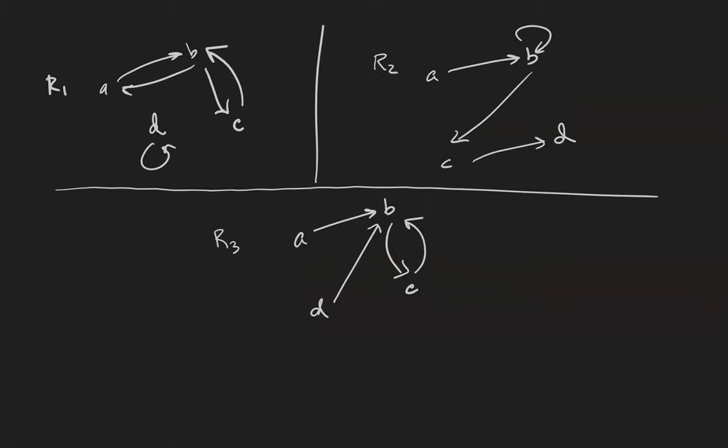In this example, we're going to use directed graphs to get the point across instead of sets of ordered pairs. So R1 is the relation that relates A to B and B to A, C to B and B to C, and D to itself.